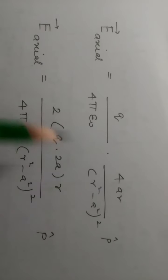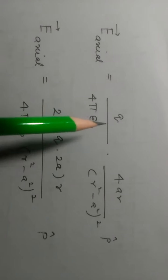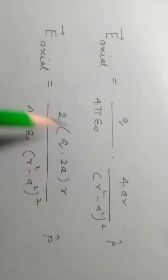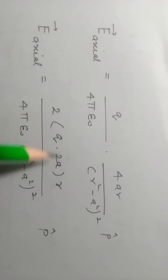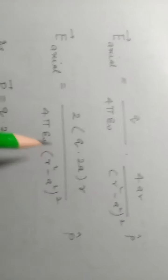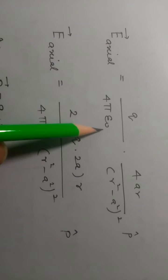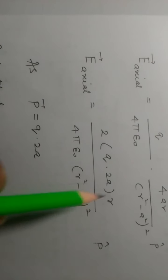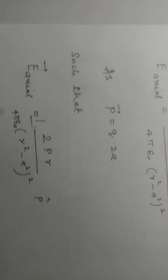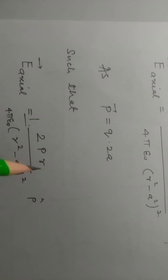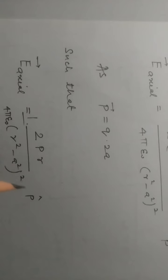E_xl is equal to q times 2a times r upon 4π epsilon times (r squared minus a squared) squared times p-hat. Now, since 2a equals the dipole length, we substitute p vector equal to q times 2a, which is the dipole moment. So E_xl equals p upon 4π epsilon times r upon (r squared minus a squared) squared times p-hat.